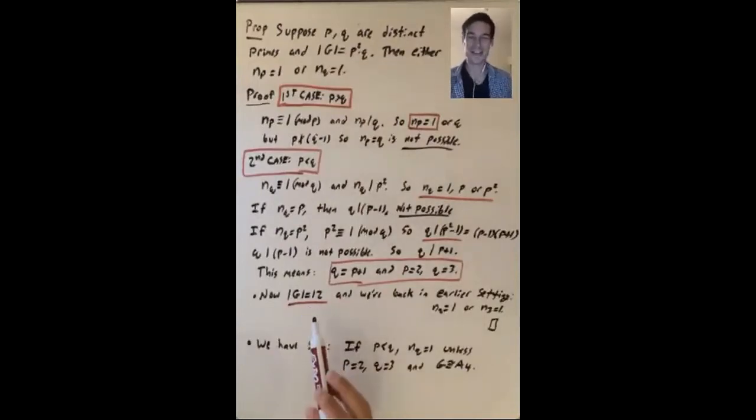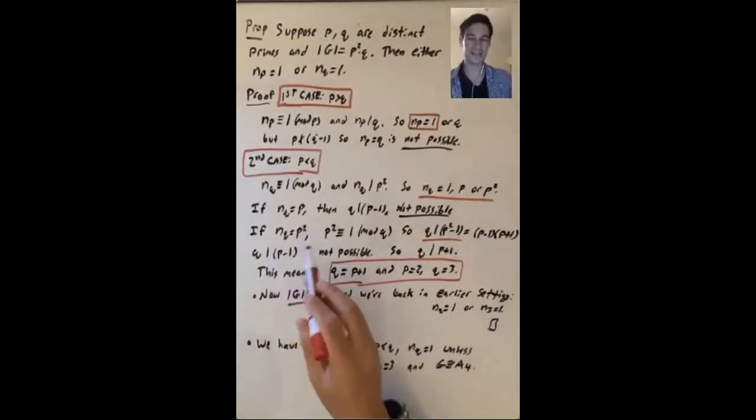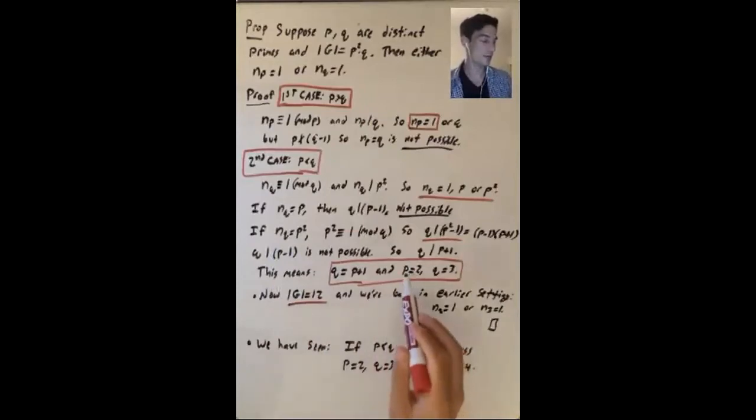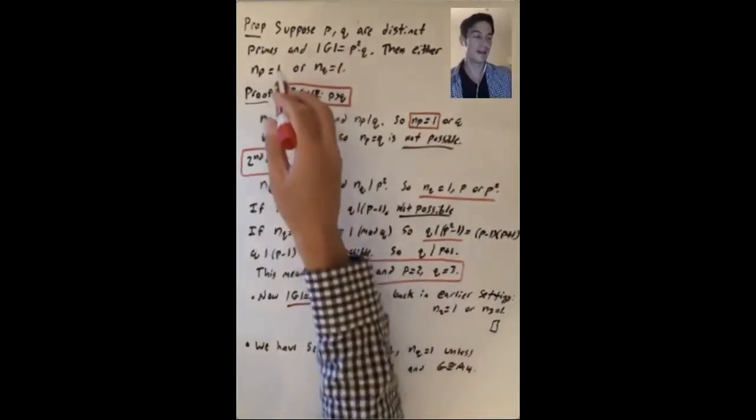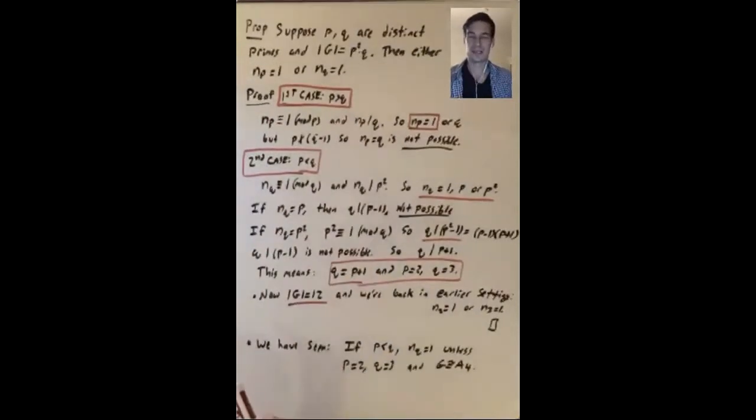And we're back in this previous case that we've already talked about where we've seen that either n2 equals 1 or n3 equals 1. So there's one case of this argument that's very special that forces p equals 2 and q equals 3, and now we're back in a case we've already considered.